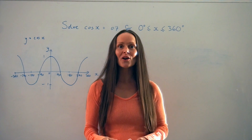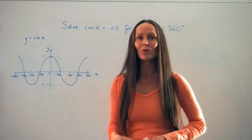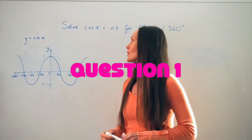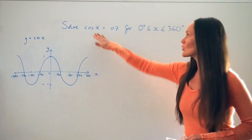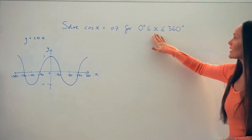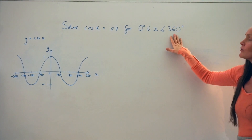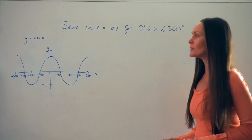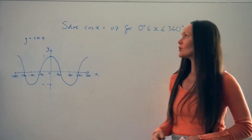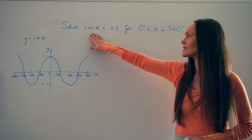In this video I'm going to show you how to solve trig equations when there's more than one solution that you need to find. In the first example we have to solve cos x equals 0.7 for x values between 0 and 360 degrees. If you haven't been given a sketch already in the question, it's a good idea to do a quick sketch of the graph y equals cos x.